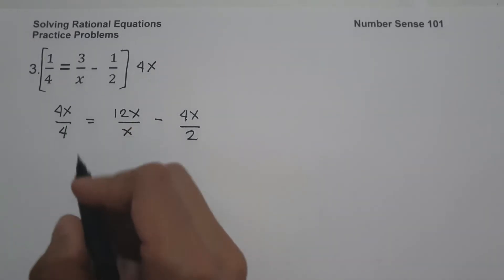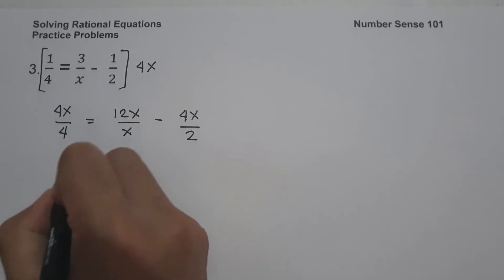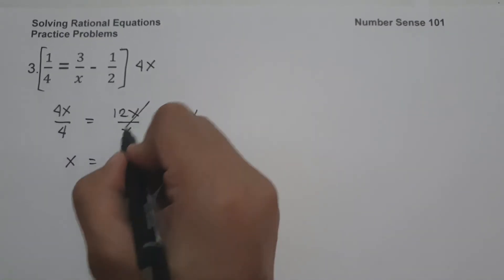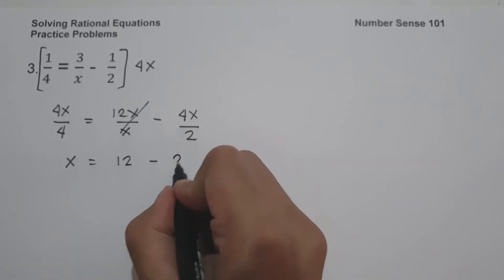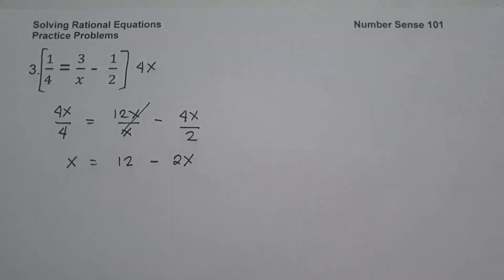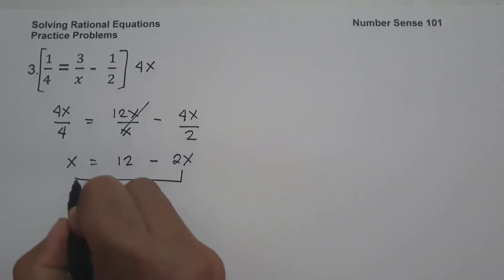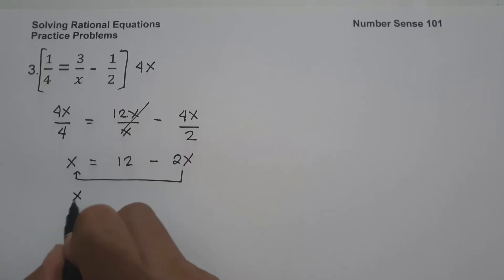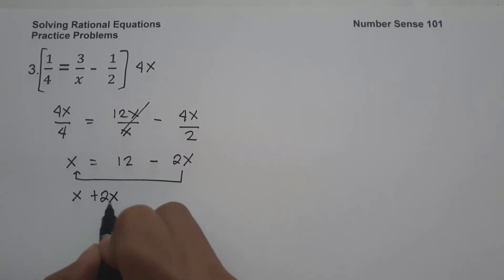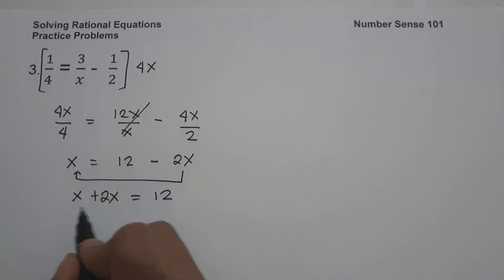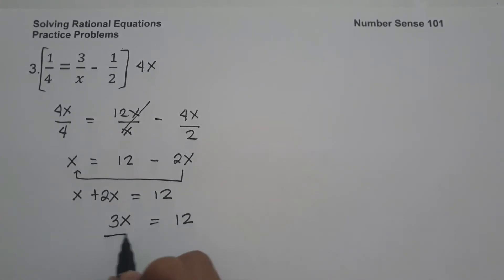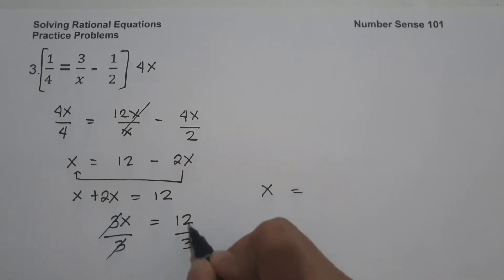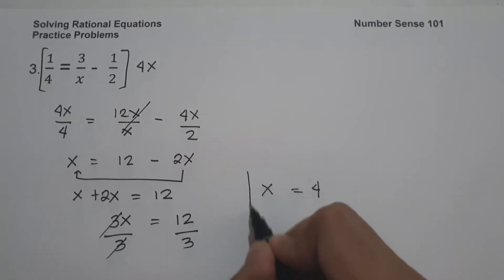So 4x divided by 4 gives us simply x. Then 12x over x cancels to 12, minus 4x divided by 2, which is 2, giving x. Moving negative 2x to the side of x, we get x plus 2x equals 12. That is 3x equals 12. Dividing both sides by 3, x equals 12 divided by 3, that is 4, and this will be our answer.